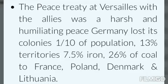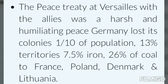Now, the Peace Treaty of Versailles. The peace treaty with the Allies was a harsh and humiliating peace. By signing the peace treaty, Germany lost its overseas colonies, one-tenth of its population and 13% of its territories, 75% of its iron and 26% of its coal to France, Poland, Denmark and Lithuania, and $6 billion as compensation for the war. The war guilt clause held Germany responsible for the war and damages. The Allied countries also took control of the resource-rich Rhineland.